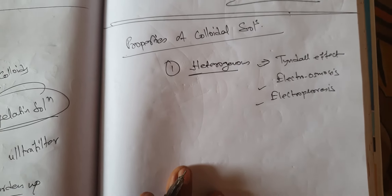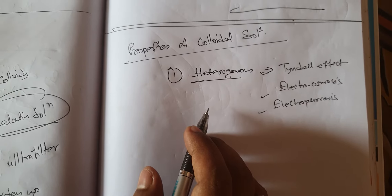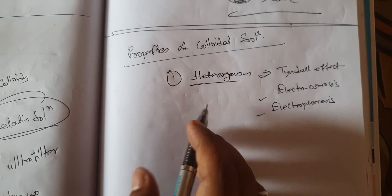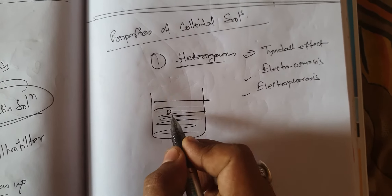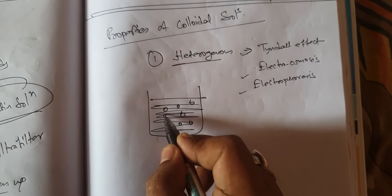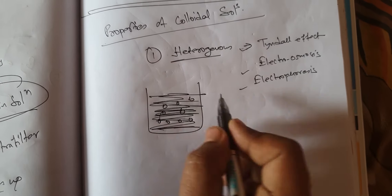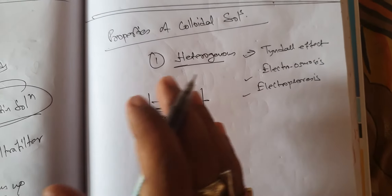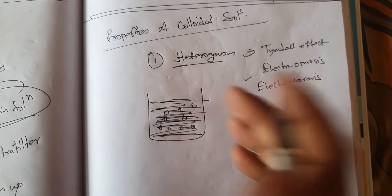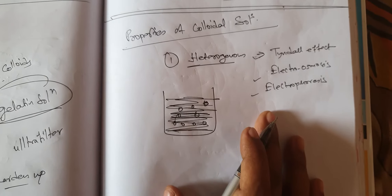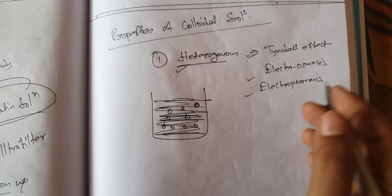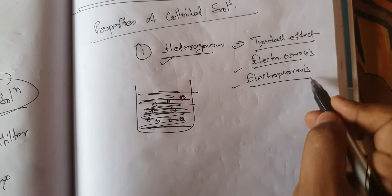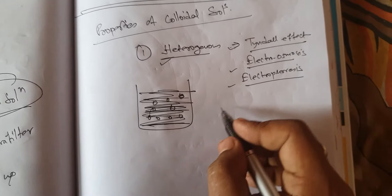The colloidal particles are larger than molecules, forming a heterogeneous mixture composed of particles of the dispersed phase and the dispersion medium. There is a dispersed phase and a dispersion medium, and the colloidal particles exist within them. Their particles are bigger than those of true solutions. The heterogeneity can be confirmed by the Tyndall effect, electroosmosis, or electrophoresis.